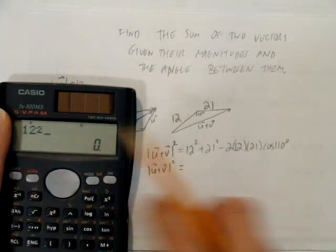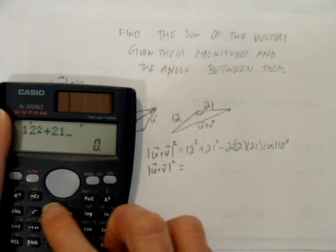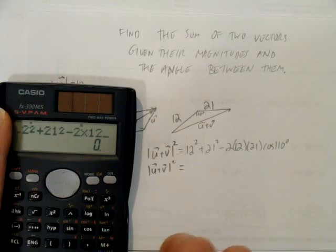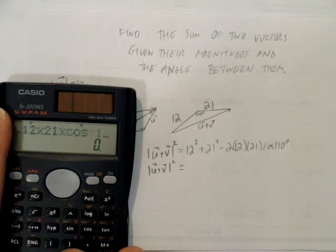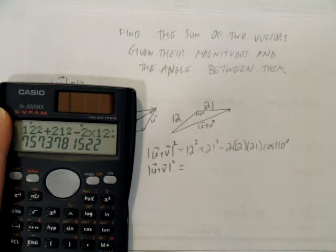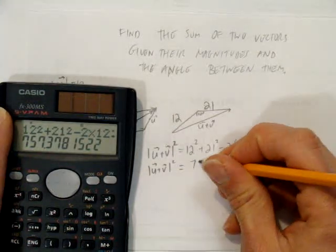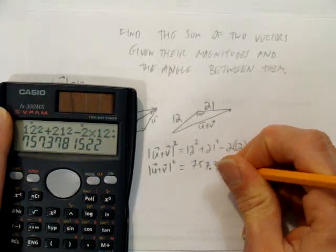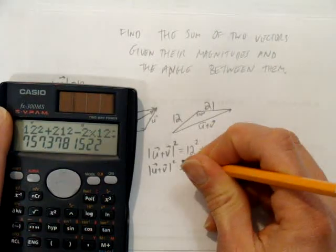So we have 12 squared plus 21 squared. I'm going to do this whole calculation on my calculator right now. Minus 2 times 12 times 21 times the cosine of 110 degrees. And I get 757 point, let's round to three decimals here, 378.